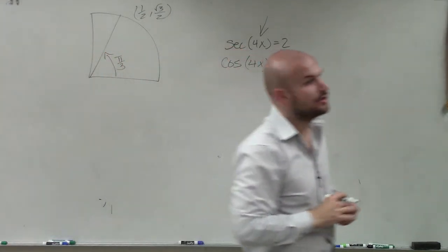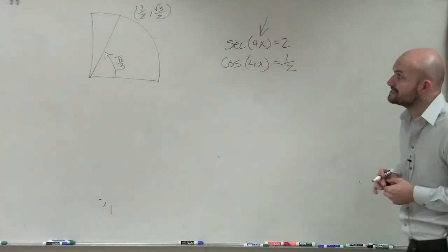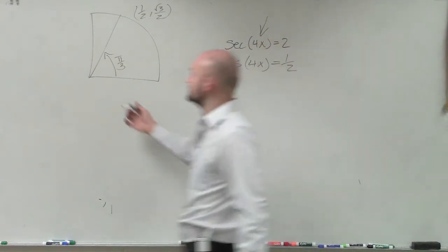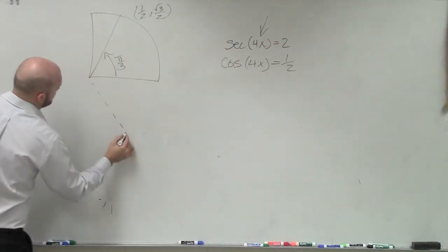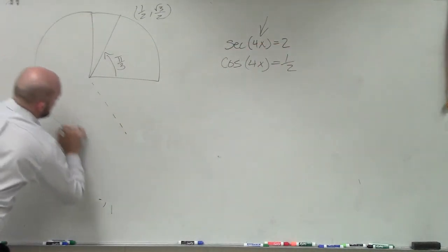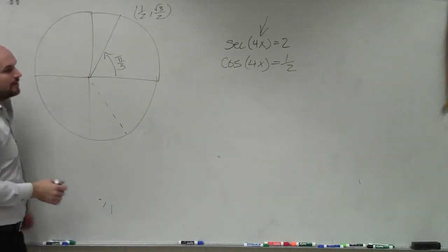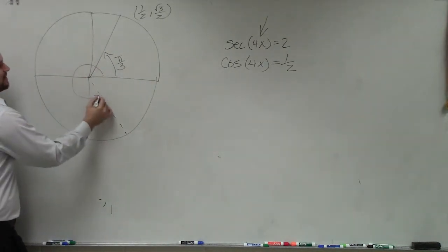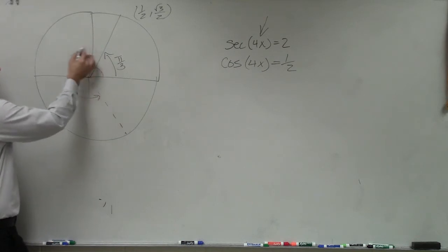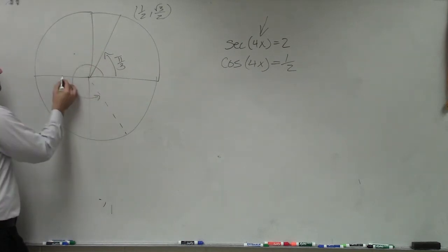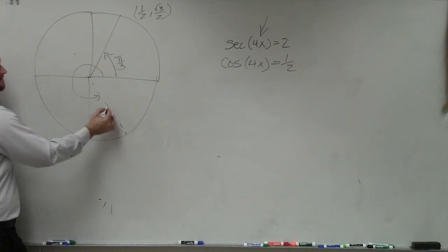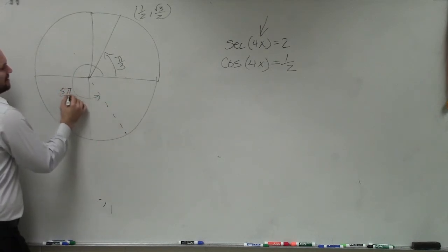But that is not the only time that our cosine is equal to 1 half. It's also equal down here. So now we need to determine, well, what is this other point? Well, if this is pi over 3, 2 pi over 3 is right here, 3 pi over 3, 4 pi over 3, 5 pi over 3, 6 pi over 3. So this angle is 5 pi over 3.